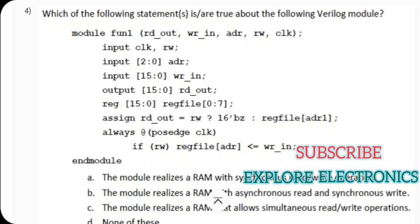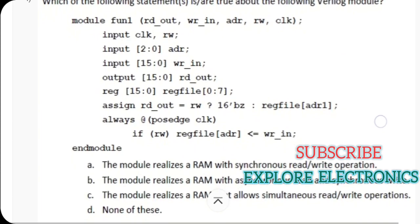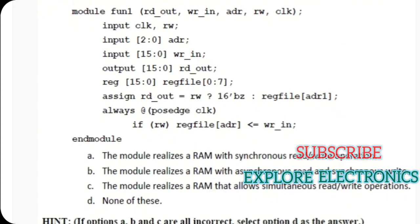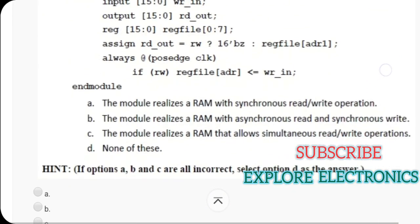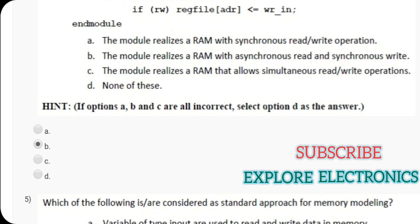And fourth one they have given some code with a Verilog module fun 1. Here reading and writing is going to be done. Here if you look at the code it is observed that within positive edge of the clock write is going to happen and outside that an assign statement is there. That is readout is equal to RW question mark which is checking what is RW and assigning these values. So for this particular code the answer is B. So the module realizes a RAM with asynchronous read and synchronous write. Write operation is happening within the clock signal means positive edge of the clock and asynchronously read operation is performing.